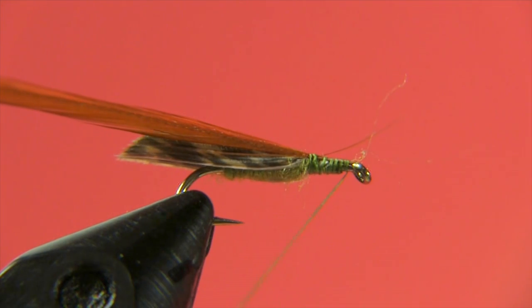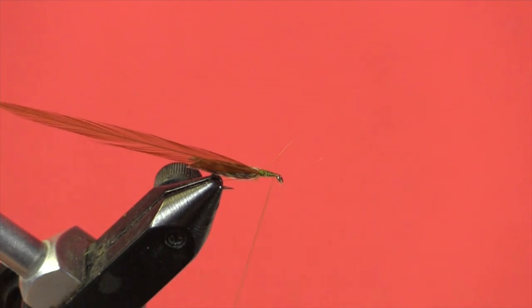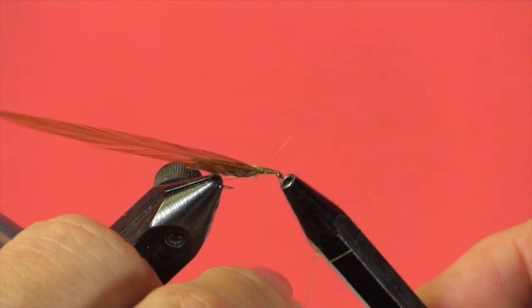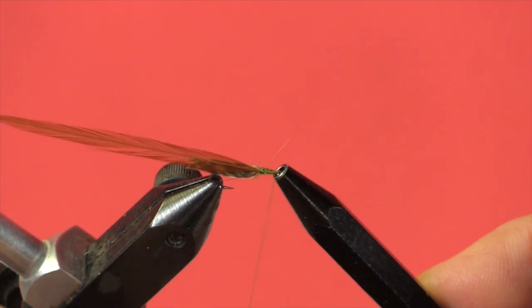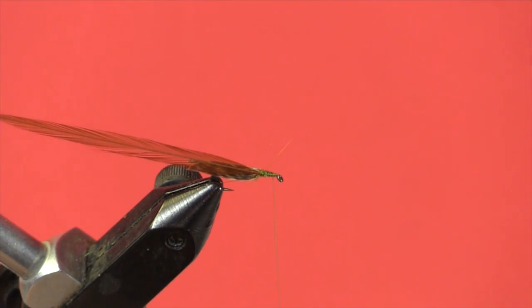Now I'll just take a half hitch tool and I'll just put a couple of half hitches right behind the eye. And this is a rotary vice I'm using, so I'm going to just hang my bobbin out of the way.